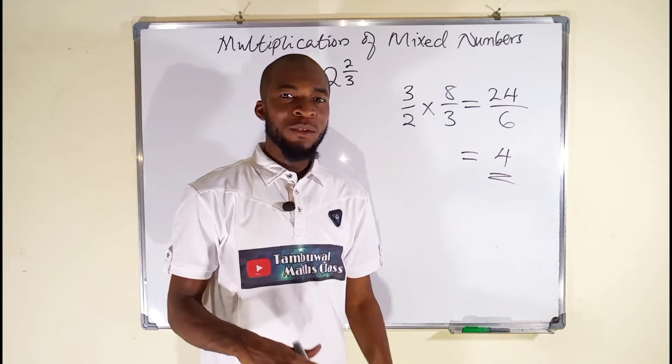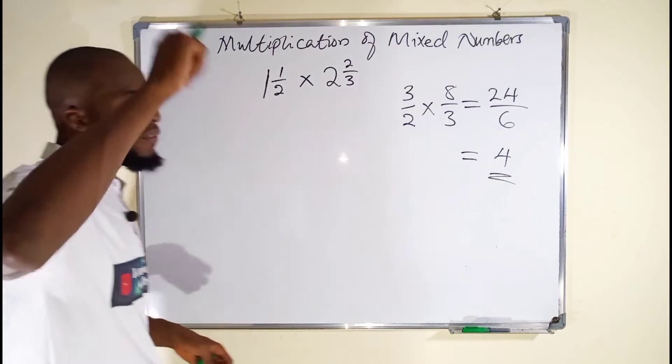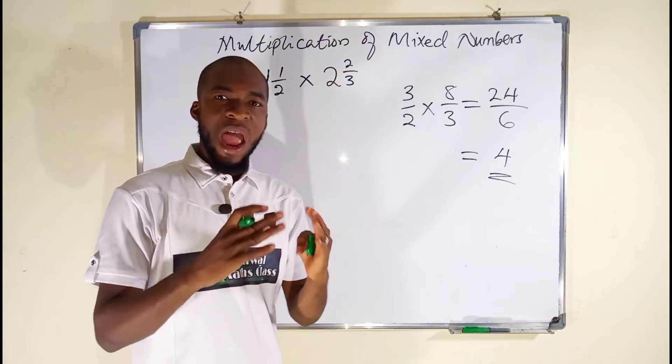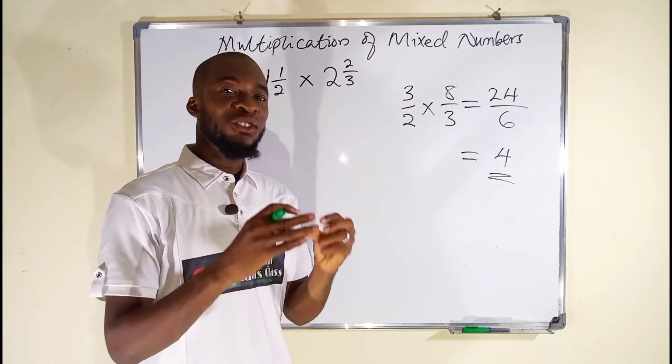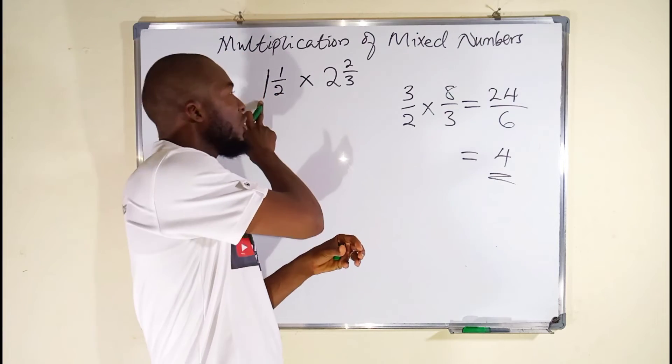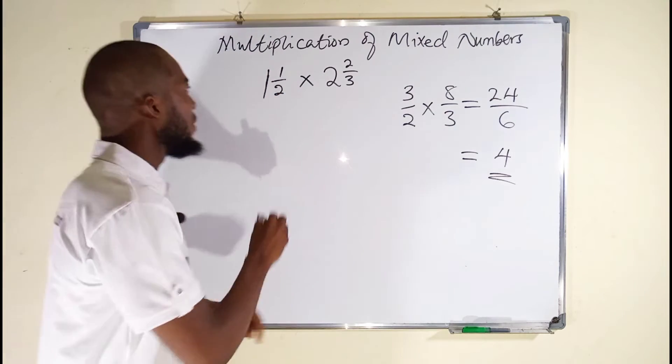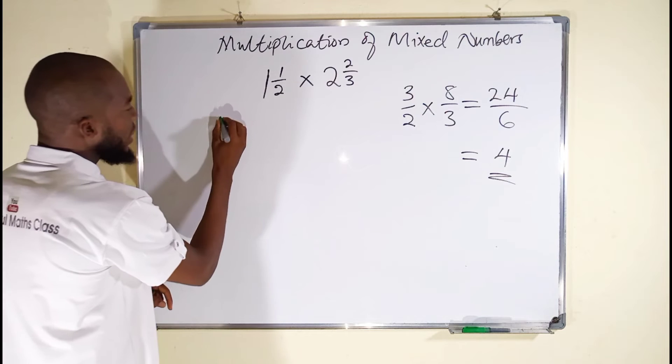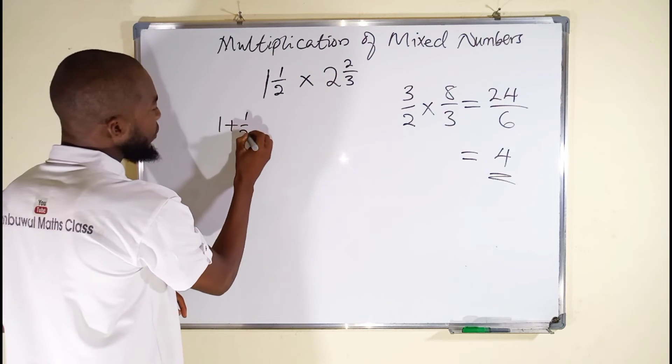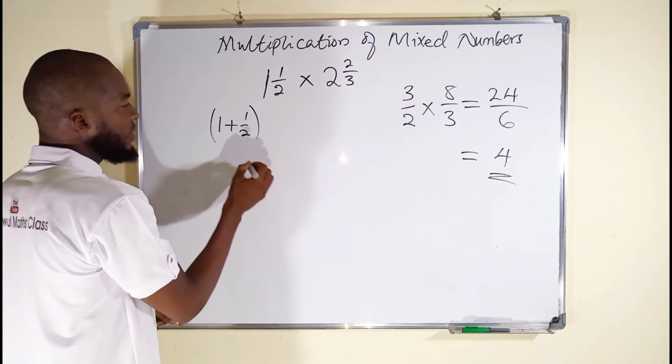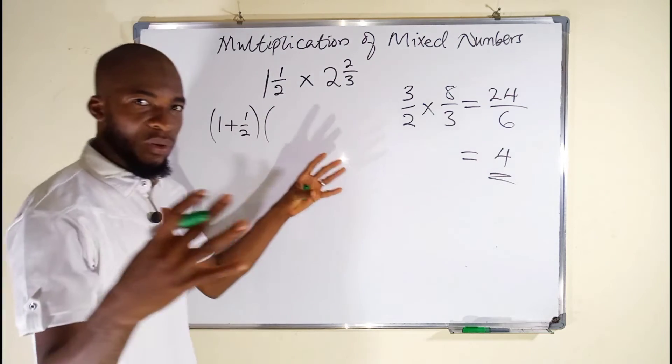So let us use it logically. You know, in our previous lesson I told you any mixed number can be written as a sum of its whole number part and a fractional part. So this first one can be written as 1 plus 1 over 2. Put them in parentheses, also put the other one in parentheses because they are multiplying one another. This is 2 plus 2 over 3.